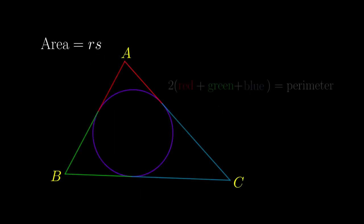From the diagram, it is now easy to see that on the perimeter, red, green, and blue segments have appeared twice. So they add up to the perimeter. And then divided by 2.